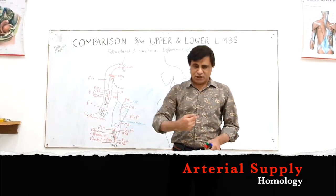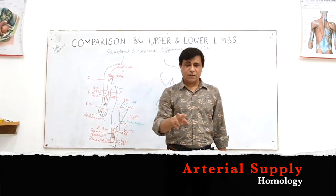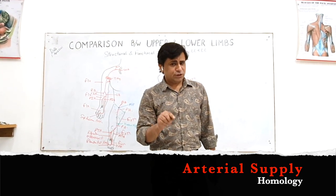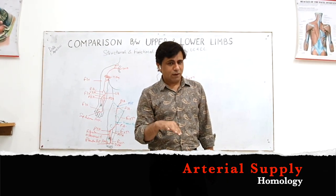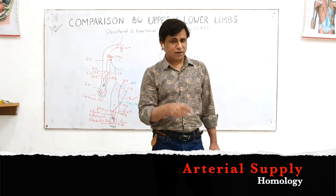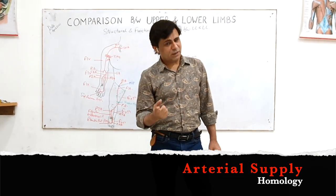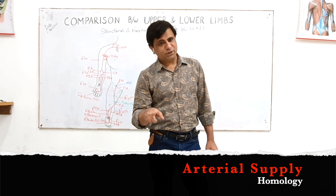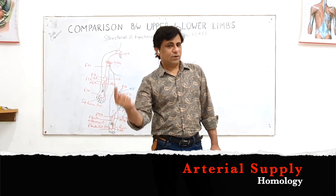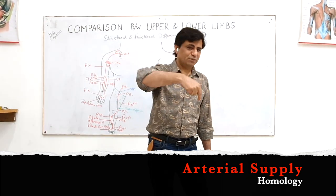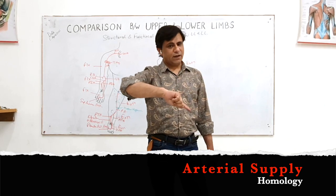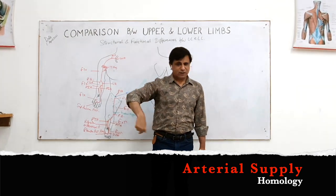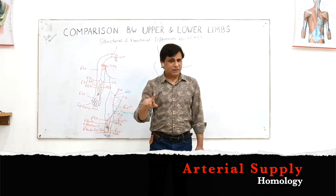The posterior tibial artery divides below the flexor retinaculum into medial and lateral plantar arteries. Whenever an artery divides terminally, one branch is major and one is minor. The lateral plantar artery is the major division, and the medial plantar artery is the minor division. The lateral plantar artery runs between the layers of the sole and forms the plantar arterial arch. So: superficial palmar arch is the continuation of ulnar artery; the plantar arterial arch is the continuation of the lateral plantar artery, which is a continuation of the posterior tibial artery.